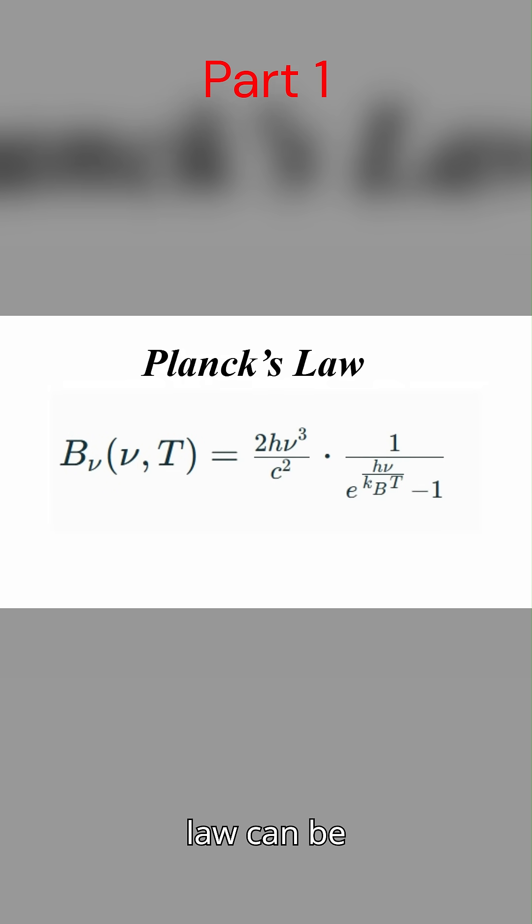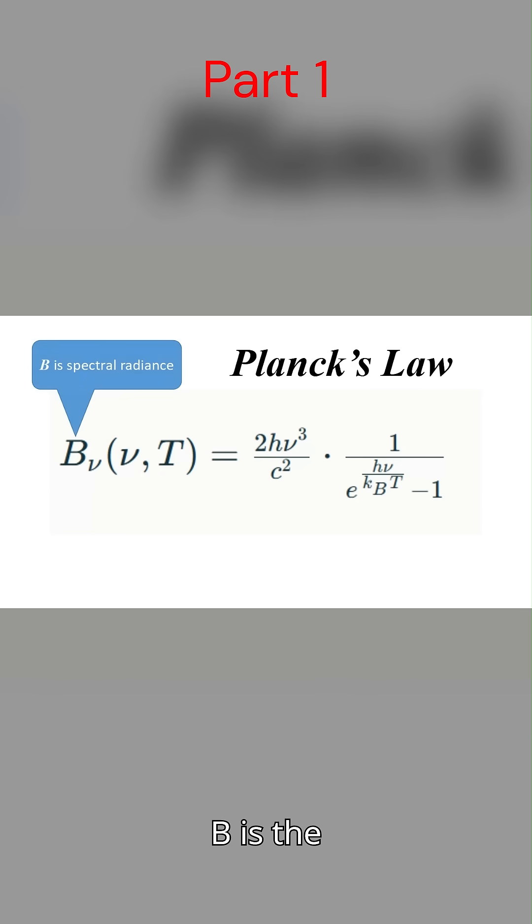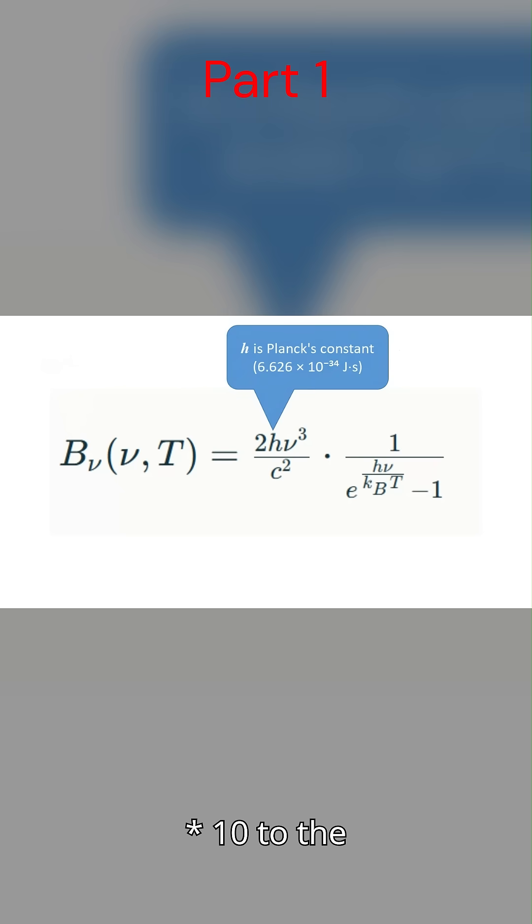The law can be mathematically expressed as shown in the screen, where b is the spectral radiance, h is Planck's constant, which is 6.626 times 10 to the negative 34th joule times second, nu is frequency in hertz, c is the speed of light in meters per second.